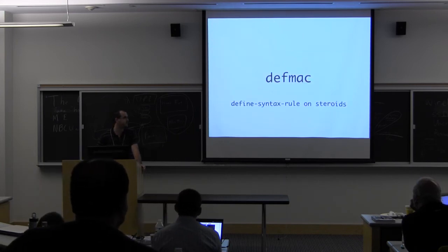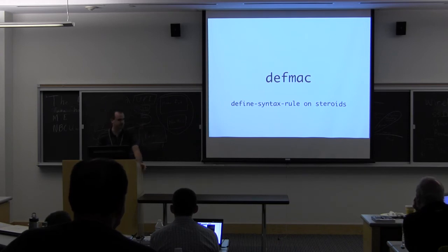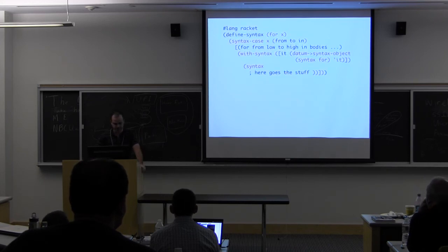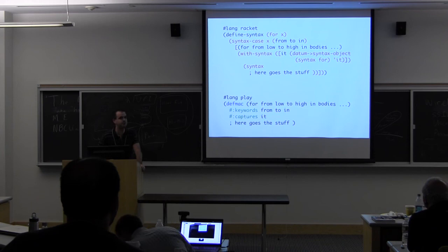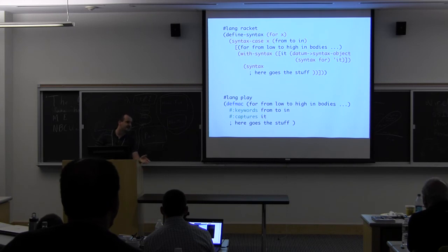And finally, we have def mac. So that's define syntax rule on steroids. So that's a shameless adaptation of Eli's old def mac version, but we have optional parameters now. So remember that's what we had to write. So now with def mac, you just basically write as a define syntax rule, but you have two optional parameters, which are keywords and captures. So we just define this is a macro and it has three keywords and it captures this identifier and that's it. Actually not exactly because it uses syntax parse inside, but as good as I could make it. So I'm sure it's not the best way to make it, but it works.